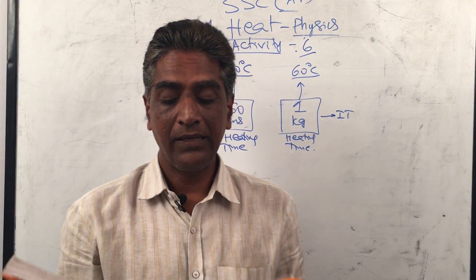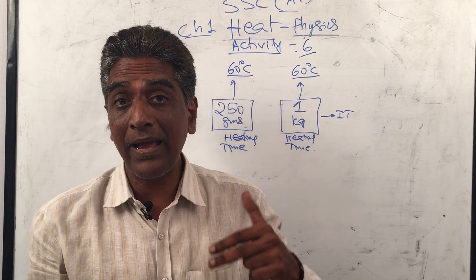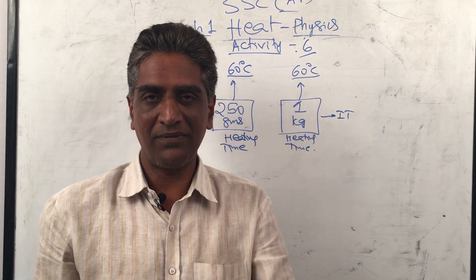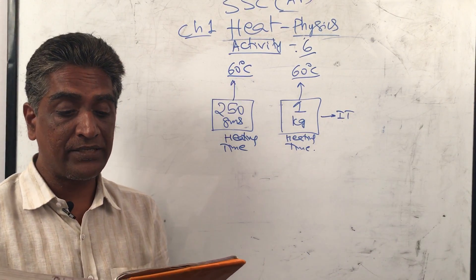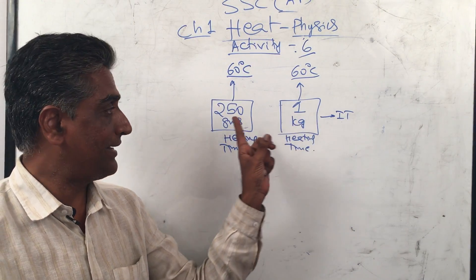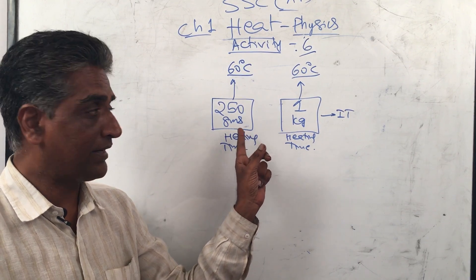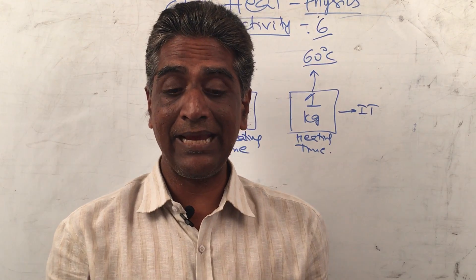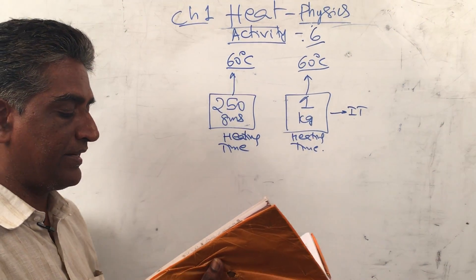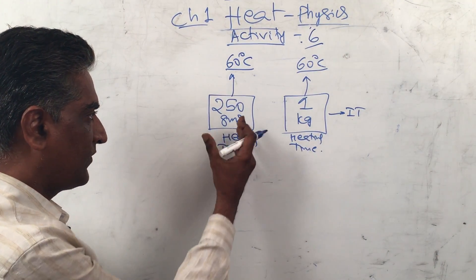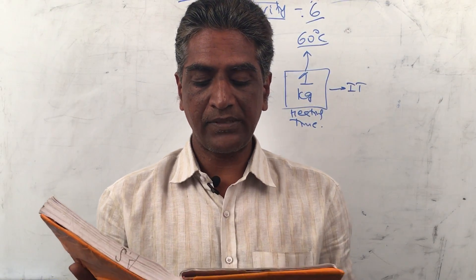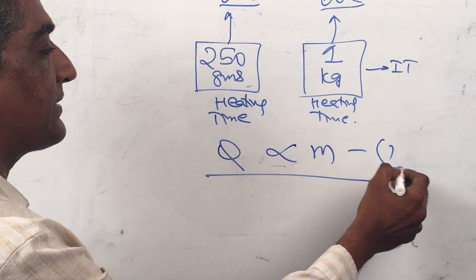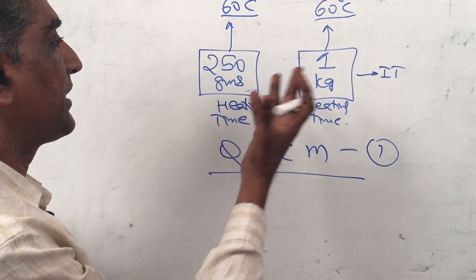More time means more heat supply. You need to supply more heat energy to a greater quantity of water than a lesser quantity for the same change in temperature. So the amount of heat Q absorbed by a substance is directly proportional to its mass. The more the mass, the more heat is required.